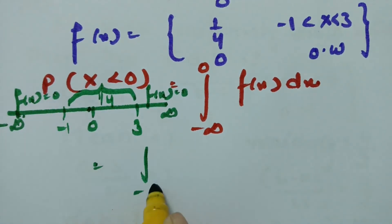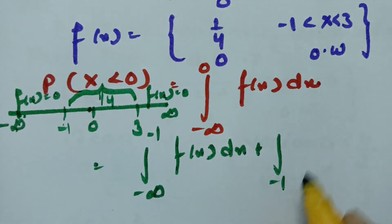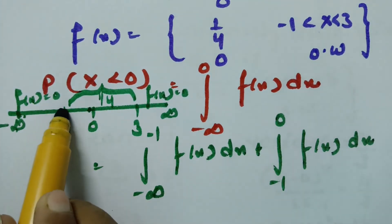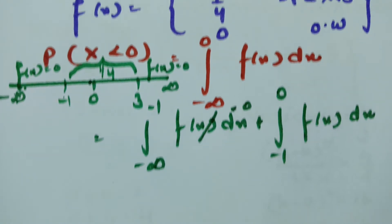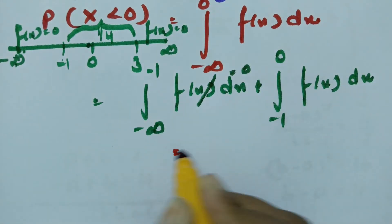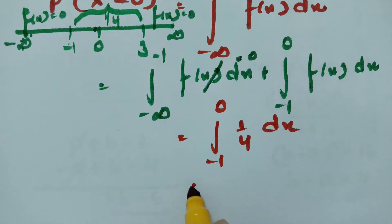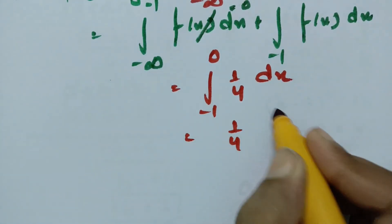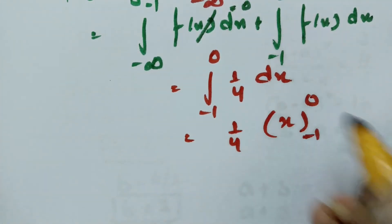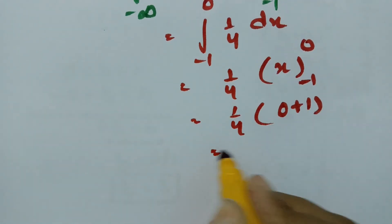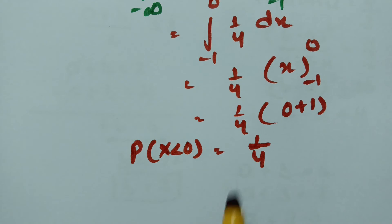We split the integral: from minus infinity to -1 the function value is 0, so that term vanishes. From -1 to 0, f(x) = 1/4. Therefore the integral becomes (1/4) × ∫ dx from -1 to 0, which equals (1/4) × [x] from -1 to 0 = (1/4) × (0 - (-1)) = 1/4. So P(X < 0) = 1/4.